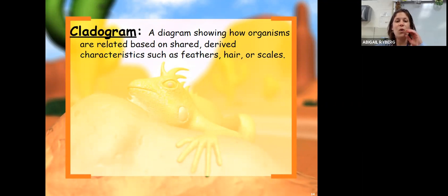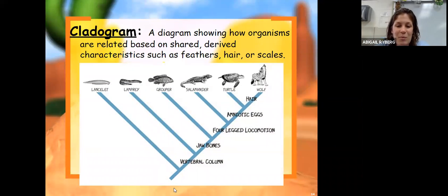There is a special type of chart that I actually hadn't seen until recently, and they're all over the test. I don't know why, but here we go. We're going to get a healthy dose before the test of cladograms. So cladograms are diagrams that show how organisms are related based on shared derived characteristics such as feathers, hair, scales, things like that. So here's an example of a cladogram.